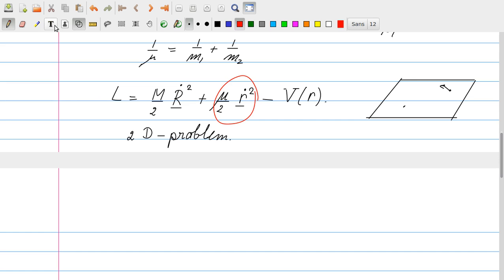So let's do that. So we leave out the first term because it's constant, and we can now write the L as mu over 2 r-squared with a dot plus r-squared phi-dot-squared minus V of r.